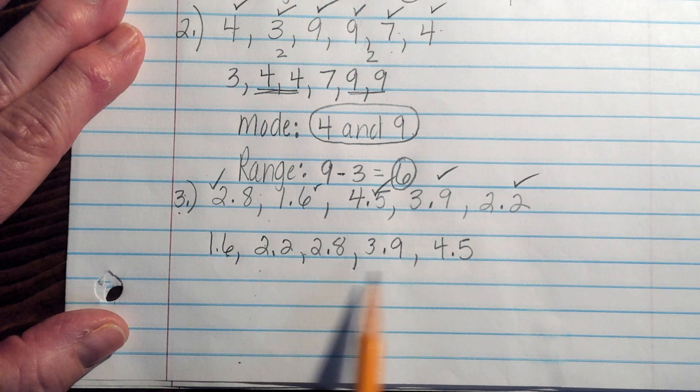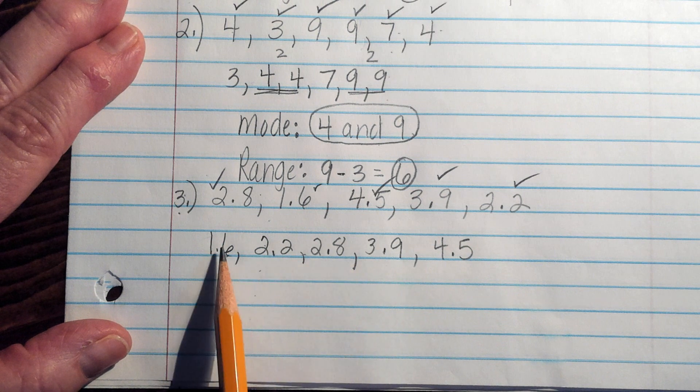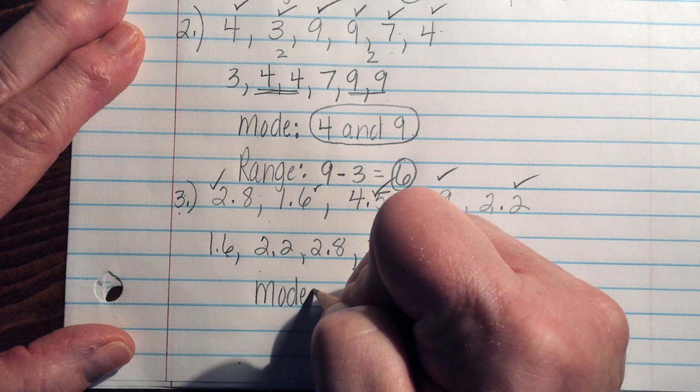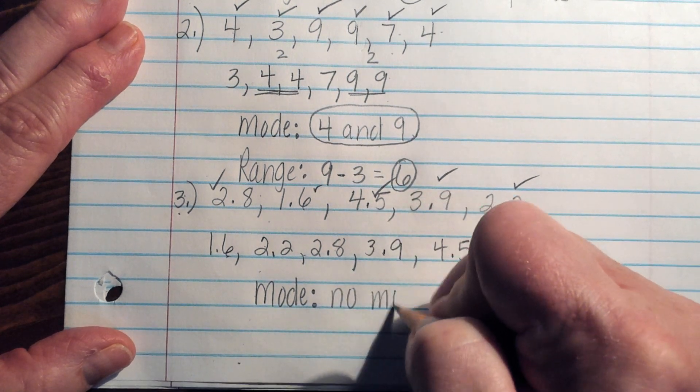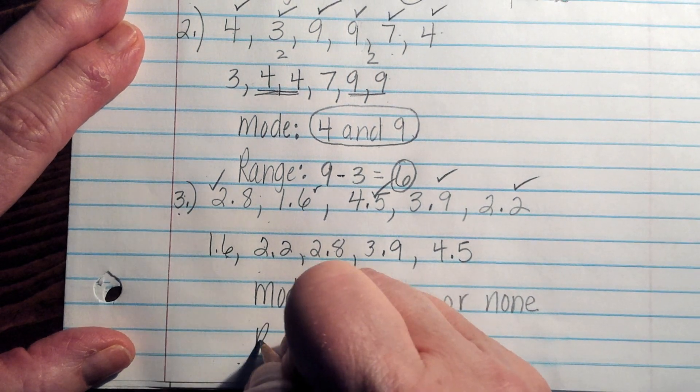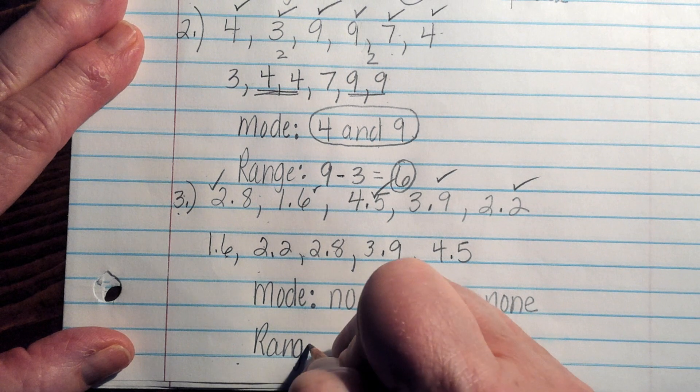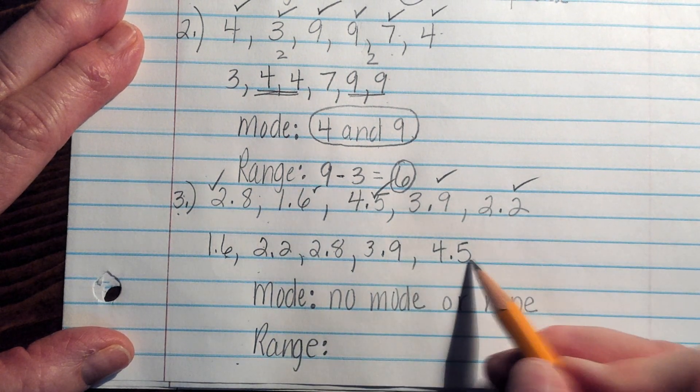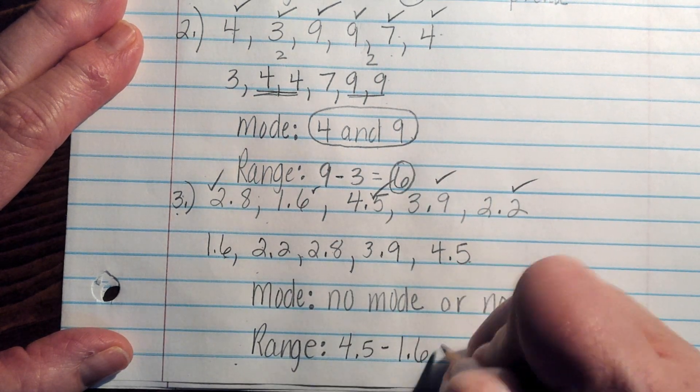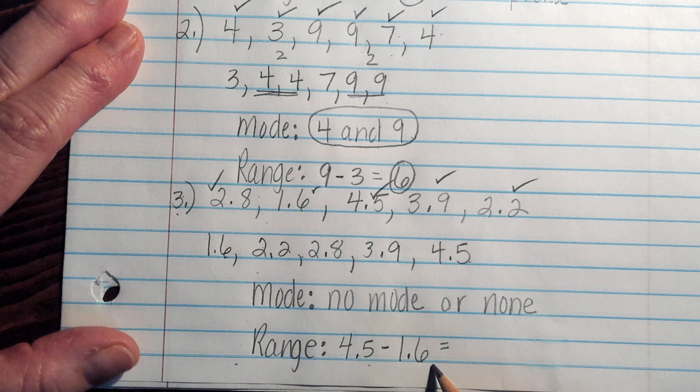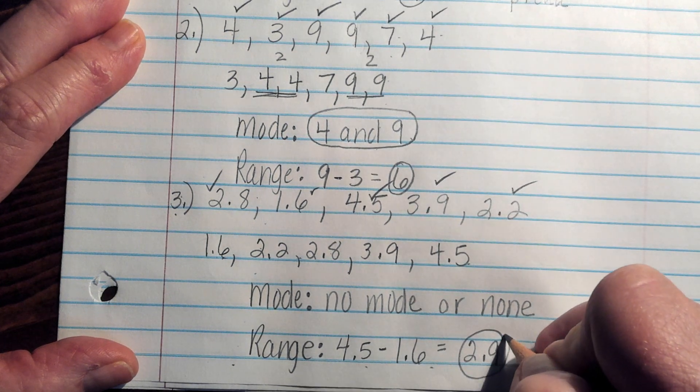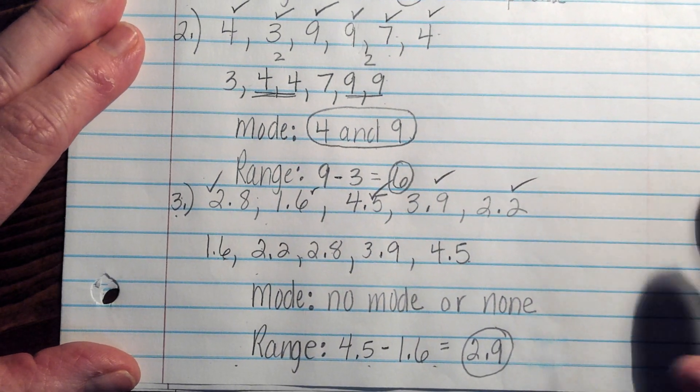Looking at this set of data, I notice that none of these numbers occur more than one time. They're only here once. When I talk about mode for this set of data, there is no mode or none. Again, range. Start with our greatest number, subtract our least number. 4.5 minus 1.6 is 2.9. Okay. So that is how we find mode and range in a set of numbers.